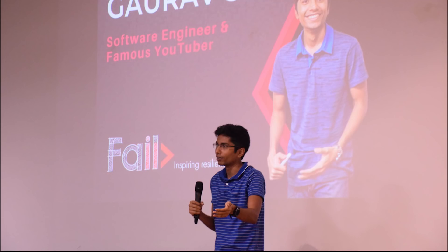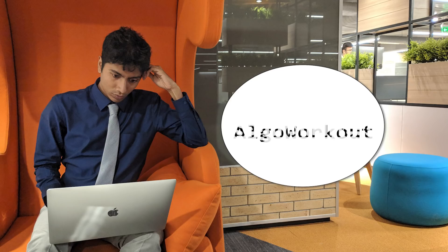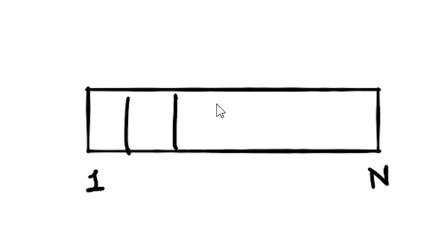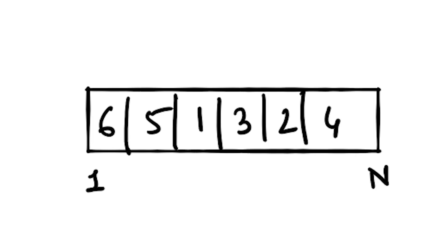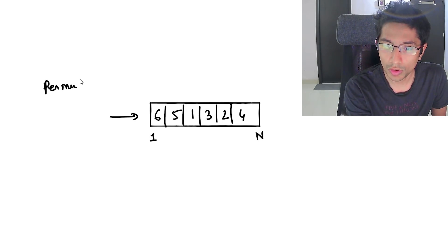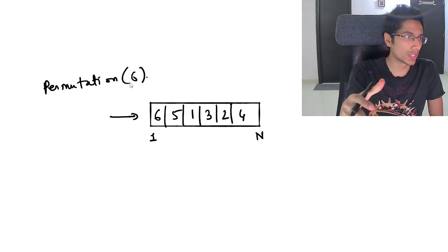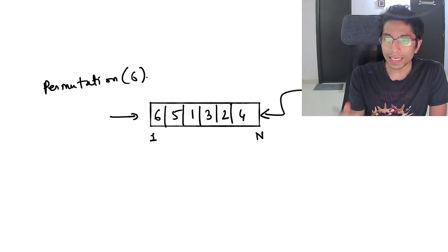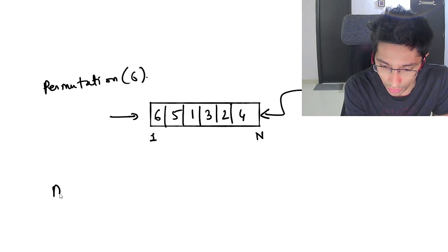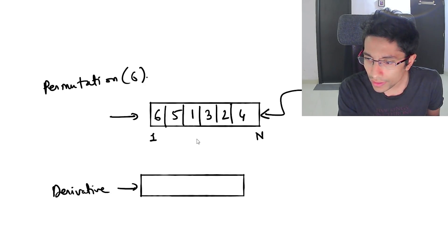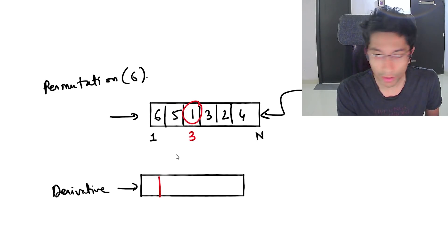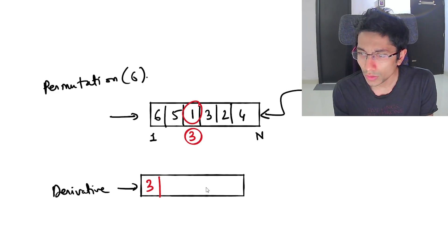Let's start. We have an array: 6, 5, 1, 3, 2, 4. You can see that this is a permutation of size 6 from 1 to 6 — that is what the array is defined to be. The elements form a permutation of n. What we need to do is create another array, let's call this the derivative. To create this array, we take the minimum element in the original array, which is at index 3, and place it here.